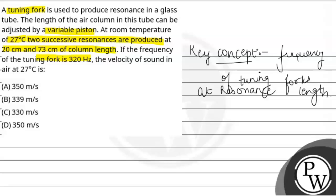Now what is given in the question: length of first resonance L1 is equal to 20 cm which means 0.2 m and the length of second resonance is 73 cm which is 0.73 m. The frequency is given as 320 Hz and temperature is 27 degrees Celsius.